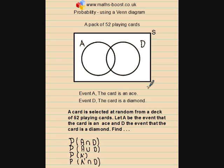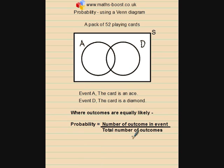What we're going to do is populate this Venn diagram with the number of outcomes associated with each event. For each particular area or space within the Venn diagram, we'll write in the number of outcomes for that space. This will help us find the probabilities, because where outcomes are equally likely — as when drawing a card from a deck — we can use the rule: probability equals the number of outcomes in the event over the total number of outcomes.